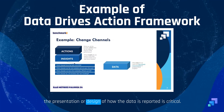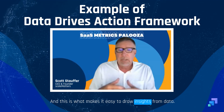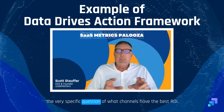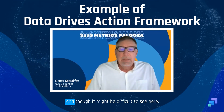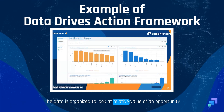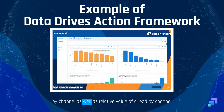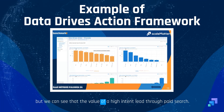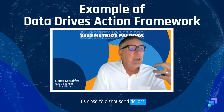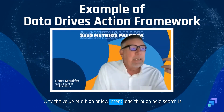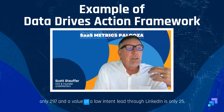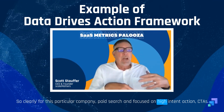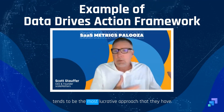The presentation or design of how the data is reported is critical, and this is what makes it easy to draw insights from data. Here is a dashboard designed to help answer the very specific question of what channels have the best ROI. The data is organized to look at relative value of an opportunity by channel as well as relative value of a lead by channel. We can see, for example, that the value of a high intent lead through paid search is close to $1,000, while the value of a low intent lead through LinkedIn is only $25. So clearly, for this particular company, paid search focused on high intent CTAs tends to be the most lucrative approach.